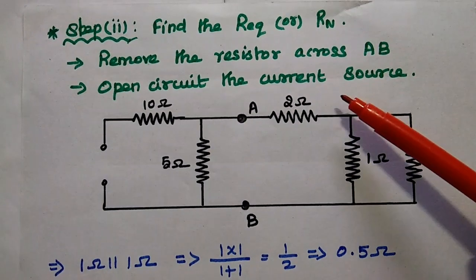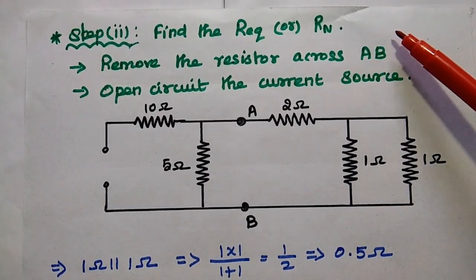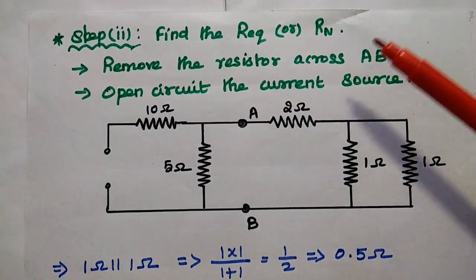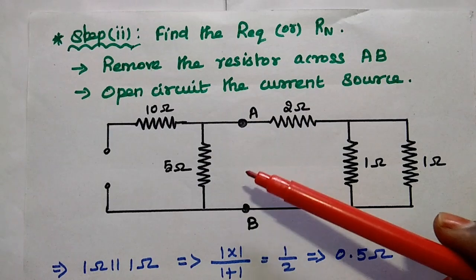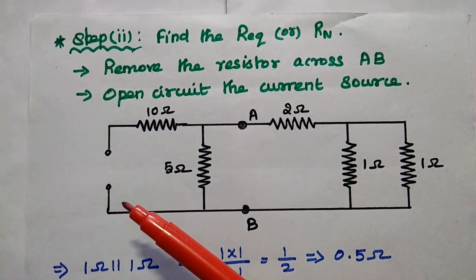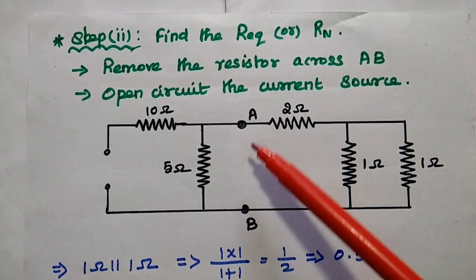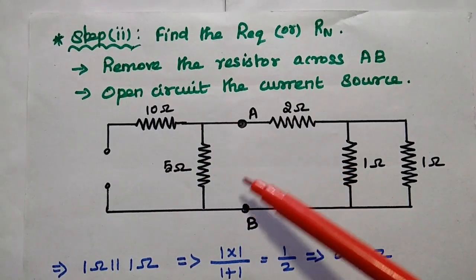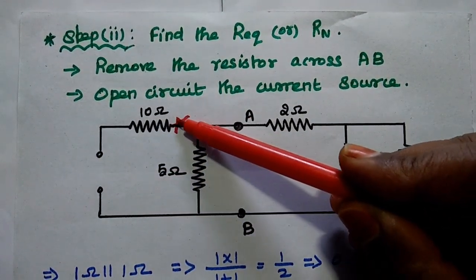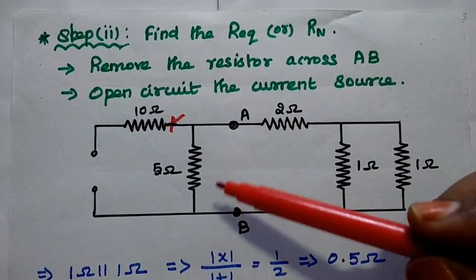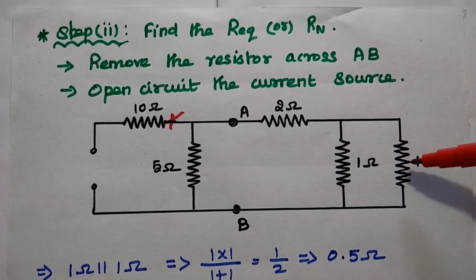In the next step, we are going to find out the equivalent resistance, also known as Norton's resistance. For calculating this equivalent resistance, we remove the resistor across the AB terminal — that is this 5 ohm resistor. At the same time, there is a current source in the given circuit, so we open circuit that current source. Since this point is open circuited, we do not consider this 10 ohm resistor. So we are going to consider the 5 ohm, then 2 ohm, and 1 ohm in parallel with another 1 ohm for calculating the equivalent resistance.